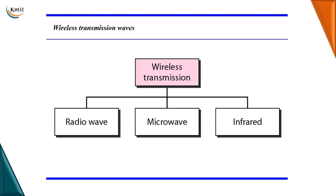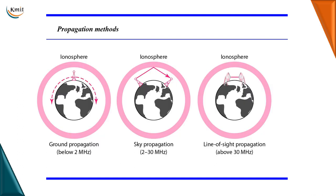Wireless transmission has three types: radio waves, microwaves, and infrared waves. Unguided signals travel from source to destination using one of three propagation methods: ground propagation, sky propagation, or line-of-sight propagation. In ground propagation, radio waves travel through the lowest portion of the atmosphere.